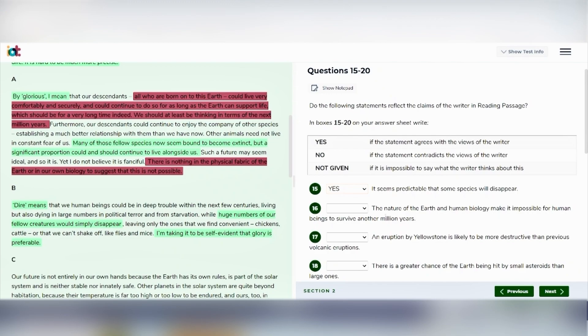Moving on to the next question. The nature of the earth and human biology make it impossible for human beings to survive another million years. In the very first paragraph you can see all who are born on to this earth could live comfortably and securely and could continue to do so for as long as the earth can support life, which should be for a very long time indeed. We should at least be thinking in terms of next million years. So it's saying that the earth supports life for at least next million years.